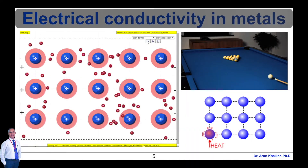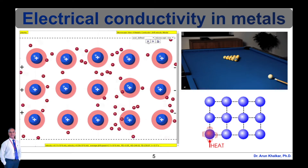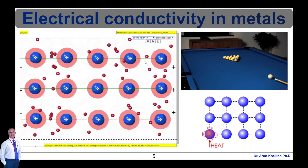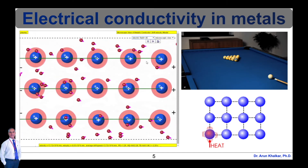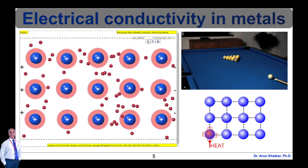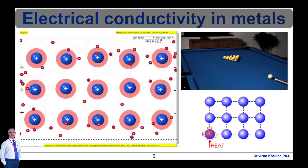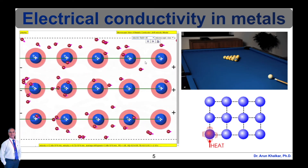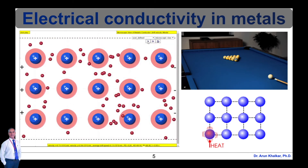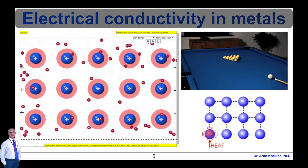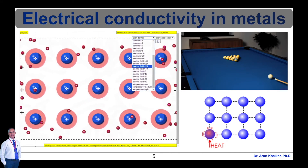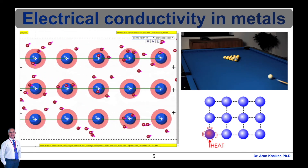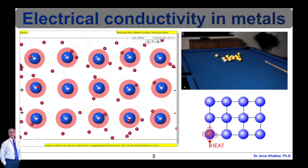Now let's see electrical conductivity in metals. Electrical conductivity in metals is a result of the movement of electrical charge particles. The atoms of metal elements are characterized by the presence of valence electrons, which are electrons in the outer shell of an atom that are free to move. It is these free electrons that allow metals to conduct an electric current. Because valence electrons are free to move, they can travel through the lattice that forms the physical structure of the metal.